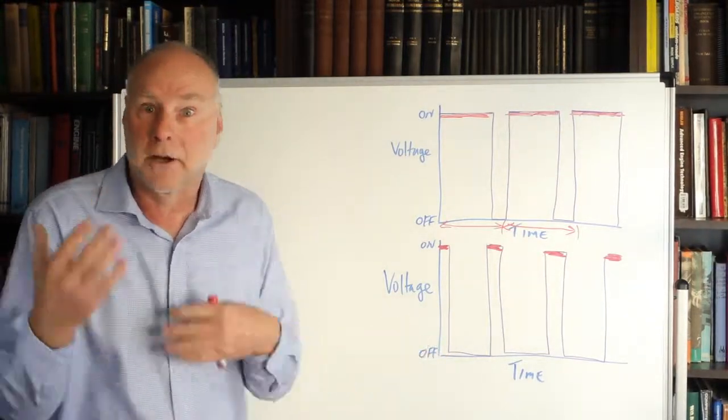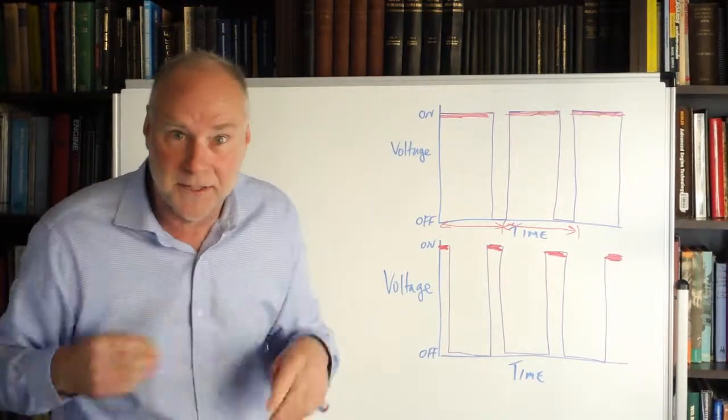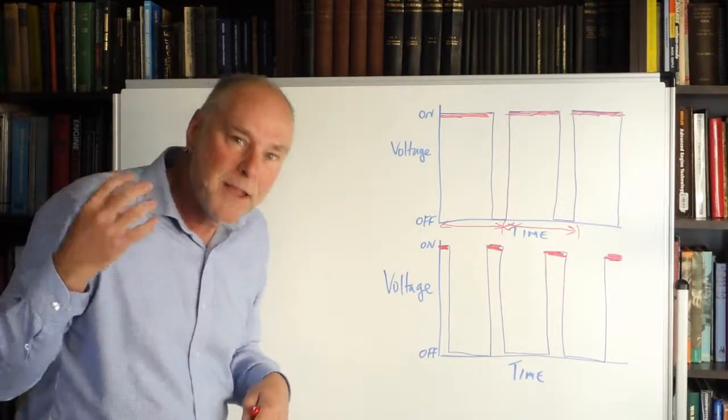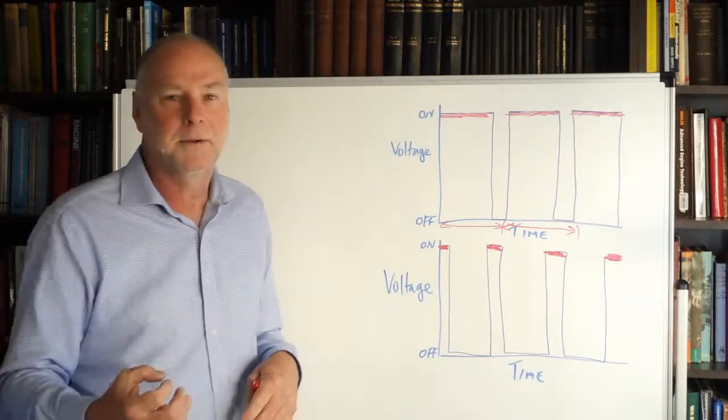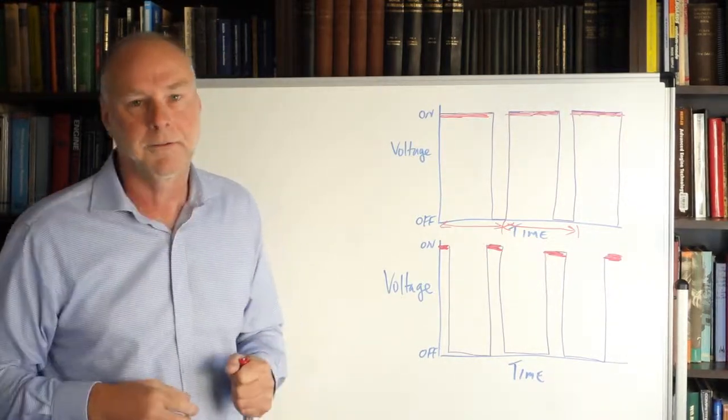If we're switching the voltage on and off 1,000 times a second, it's going to act as if it's just an average. It's not going to be able to see those 1,000 different pulses. The inertia of the rotating armature is not going to be constantly changing in speed. So if we pulse width modulate at a high frequency, we can get very smooth control, smooth control of motors, smooth control of fans.